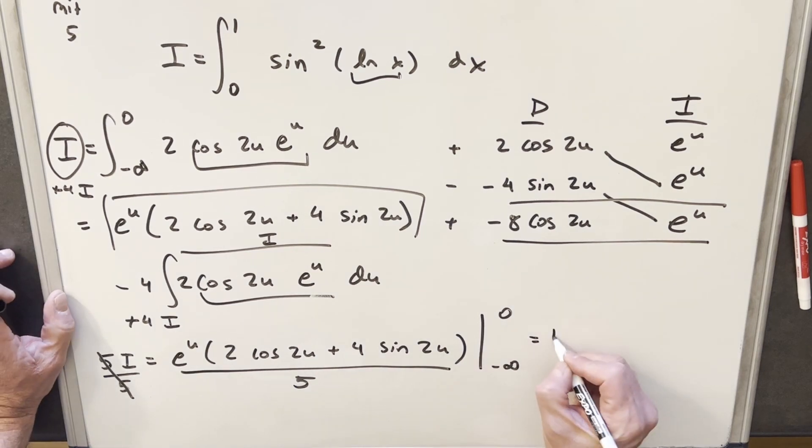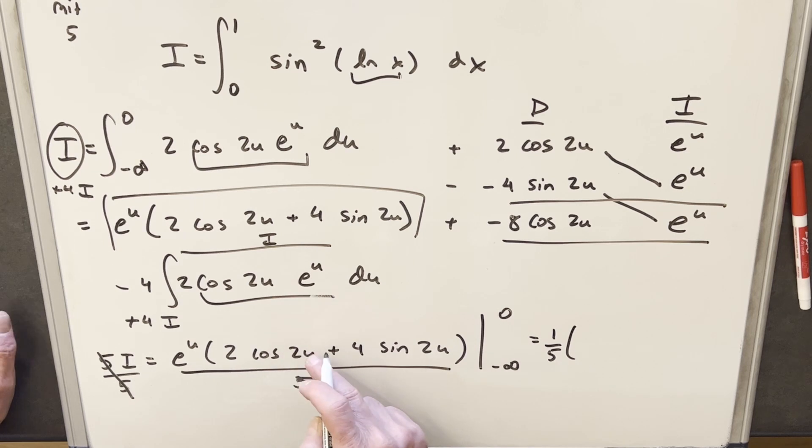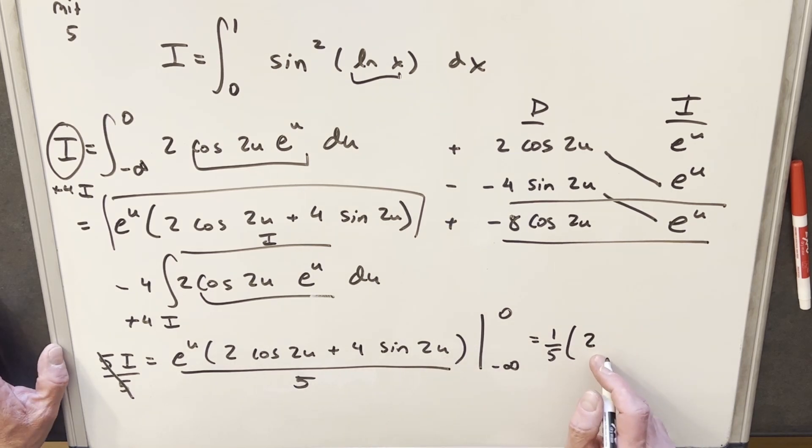So evaluating this, I think I'm going to just pull a 1/5 out front to try to make it easier on myself. So plugging in a 0, cosine at 0 is going to be 1. So we're going to have 2 plus, then here sine at 0 is 0. So we're just going to have a 2 for the first part. I may have skipped over it, but e to the 0 is 1. So that's why I kind of glanced over that.